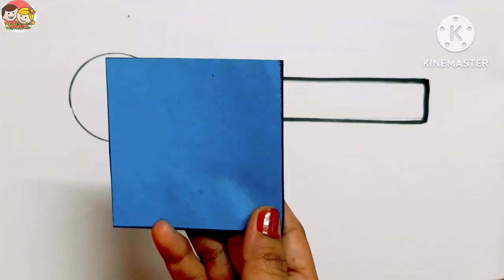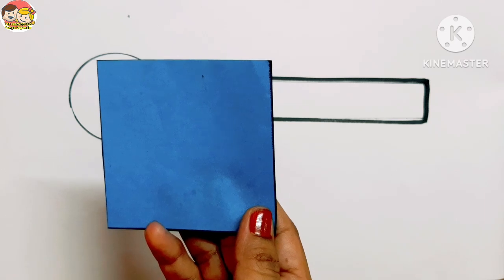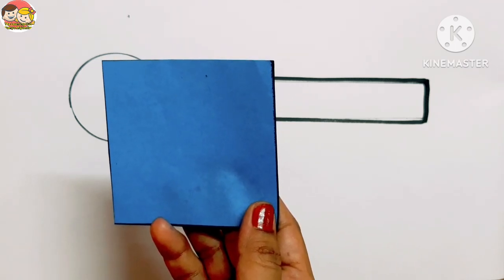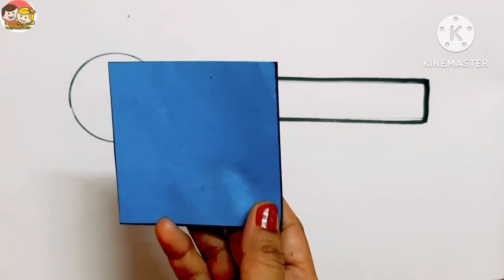Children, look here. This is a squared paper, and we can form different types of shapes with the help of this paper. So let's see.